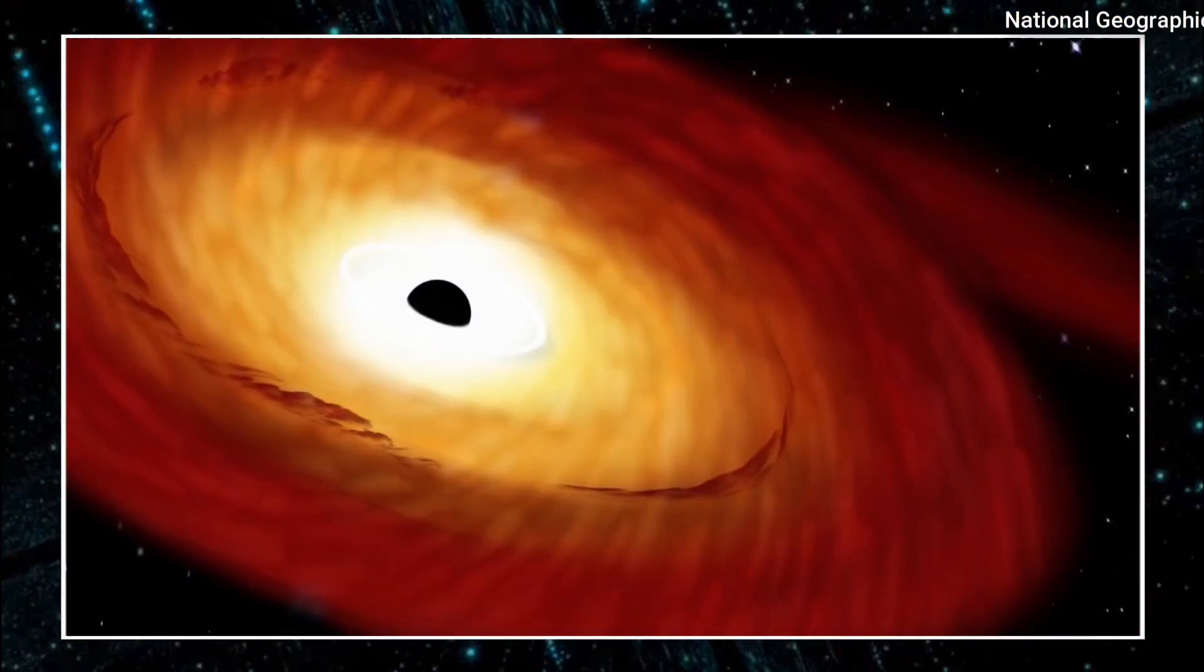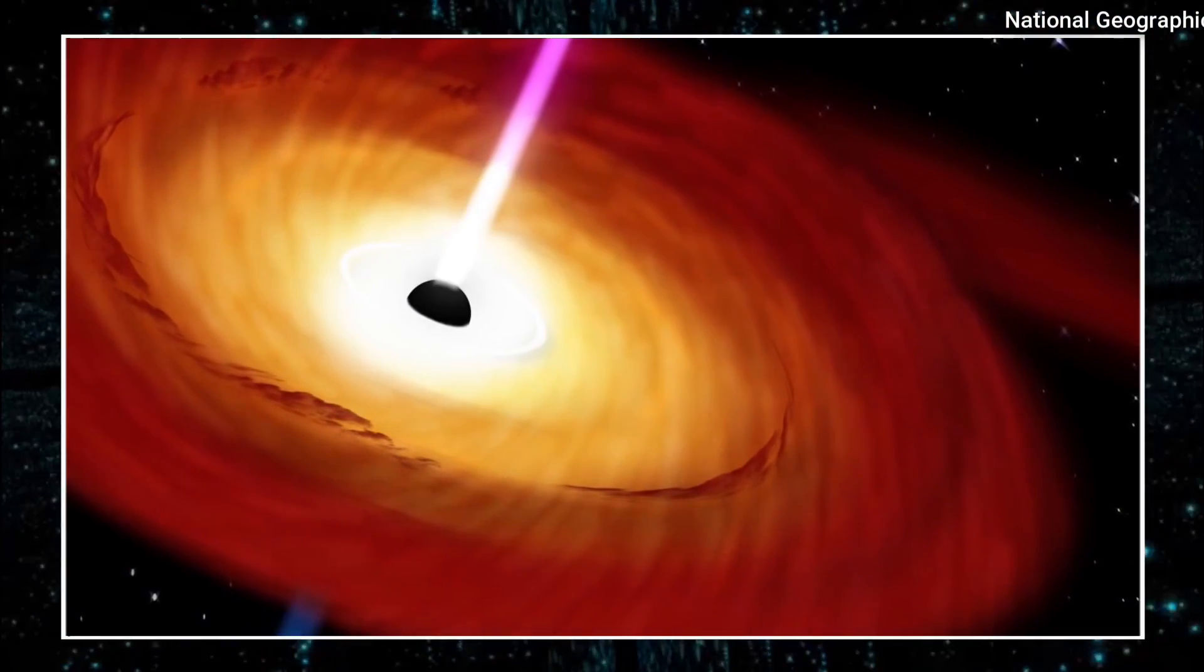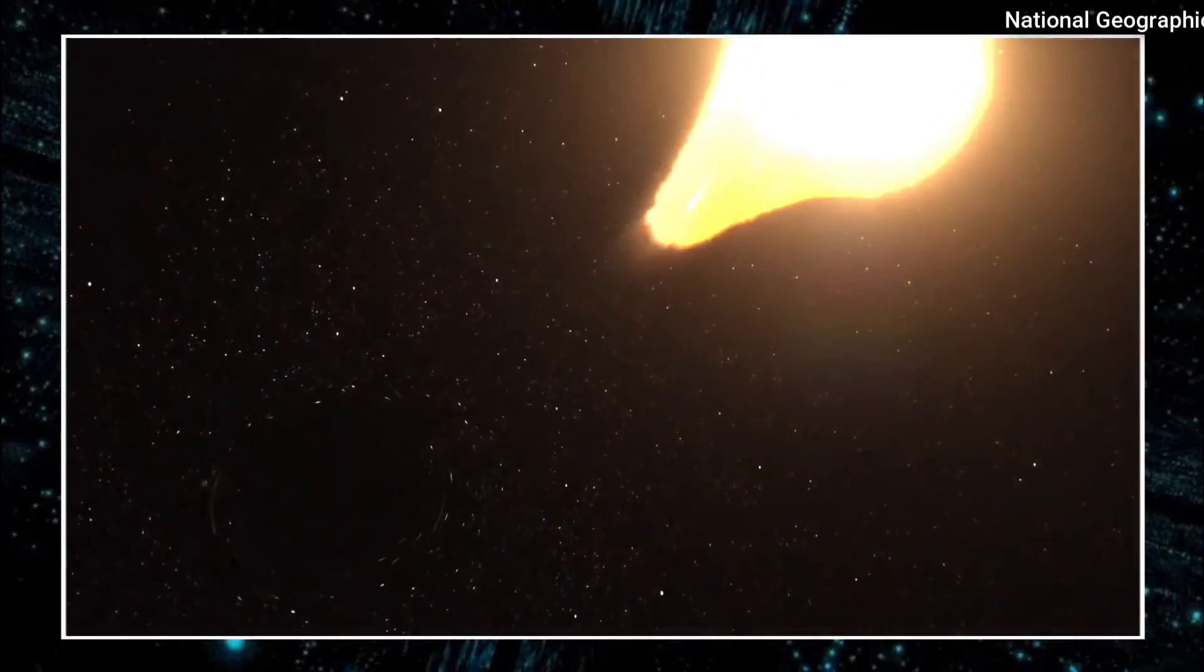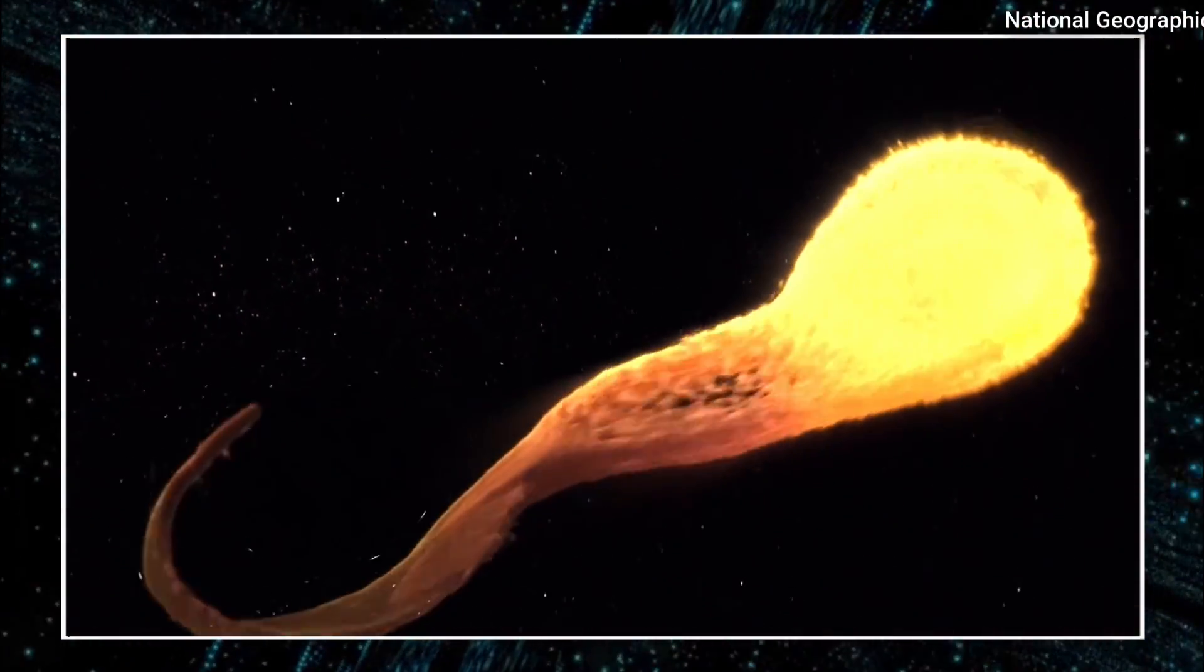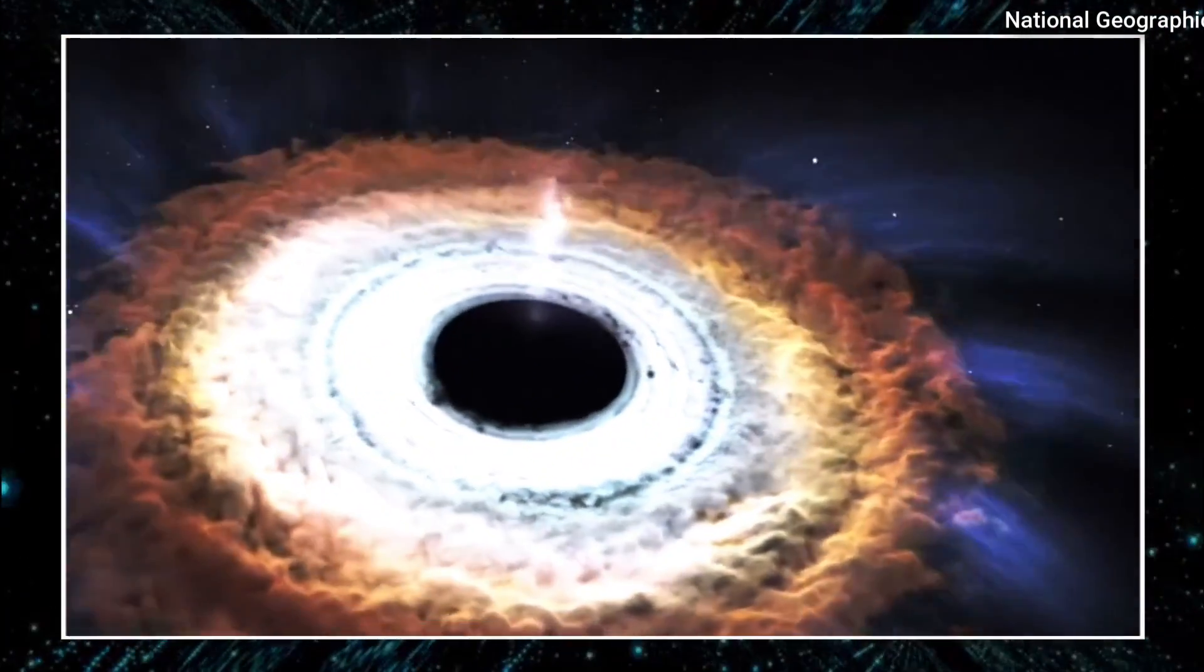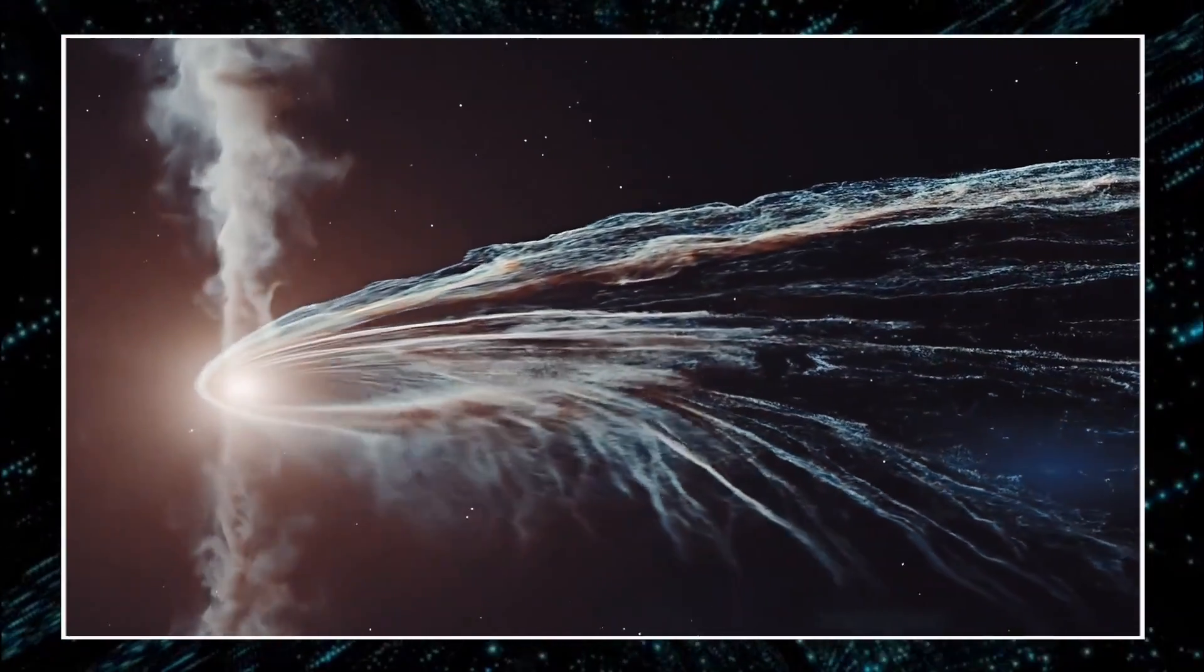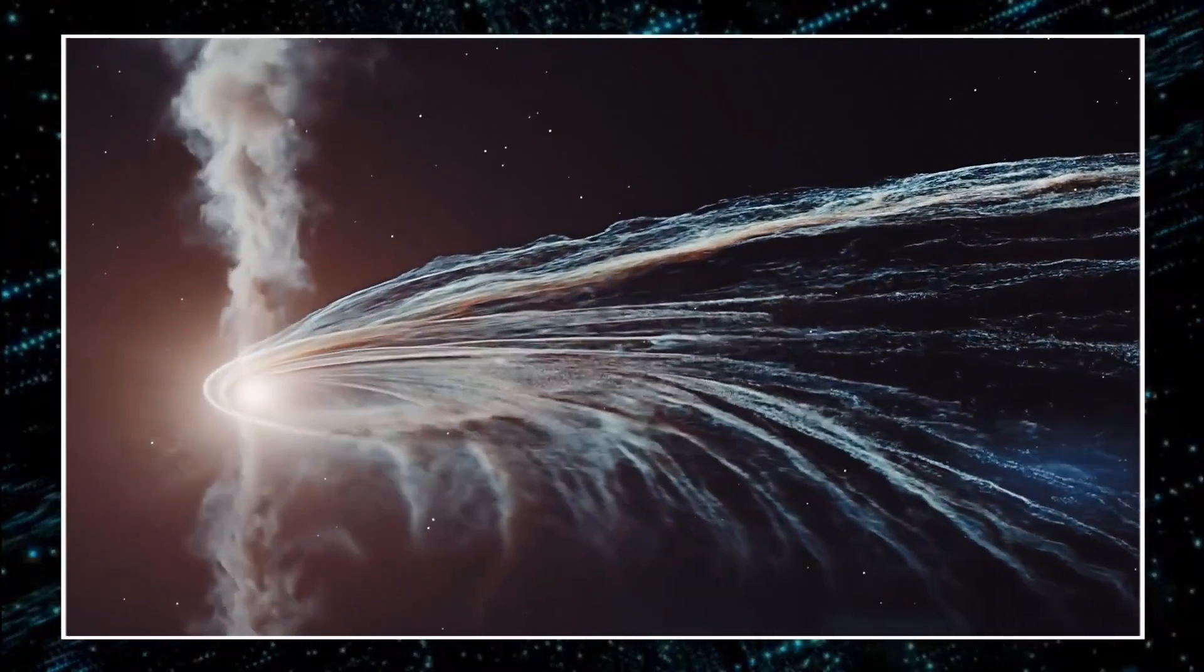This process may also explain the discovery of supermassive and ultramassive black holes in the early universe. These black holes could have formed as a result of the direct collapse of gas clouds that were heated and ionized by the radiation emitted by the active black hole at their centers. This process would have allowed the black holes to grow at a breakneck pace, explaining their enormous size.